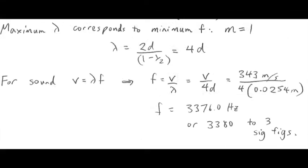So looking at the rest of the solution here, the maximum lambda will correspond to the minimum value of frequency. So that will be when m is smallest, right? So m equals 1 will be both the largest value of lambda and the minimum frequency, which is what you're asked for. So setting m equals 1 in that equation, we have lambda equals 2d over 1 minus 1 half, or 2d over half, so it's 4d.